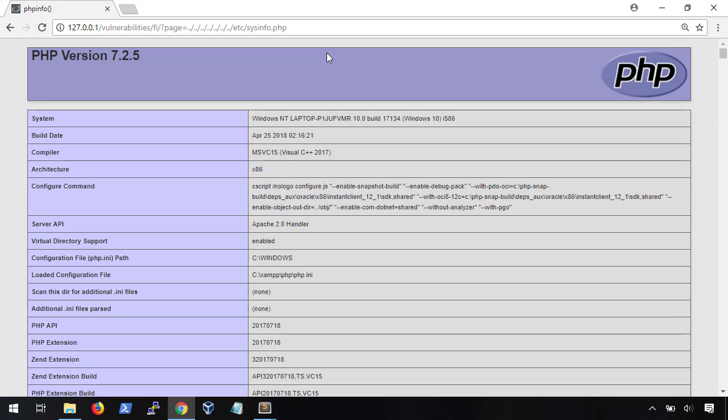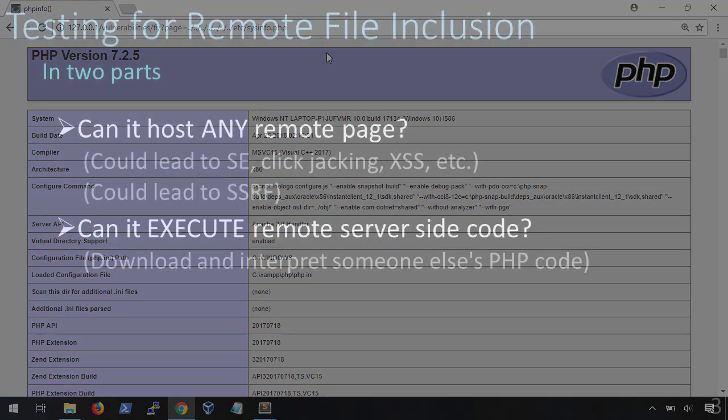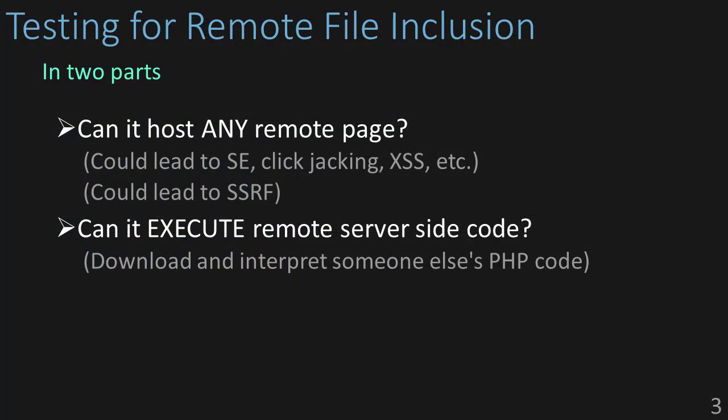Enter remote file inclusion. RFI is even more serious than LFI, because an attacker could host their own web server but use your website to run their code. Even if your web app doesn't allow code execution, they could still use it as a jump-off point for cross-site scripting, click-jacking, or social engineering attacks. I like to test this in two ways. The first is to see if the vulnerable server can host any web page from a remote server — if it can, we already have a vulnerability that can be abused. This can also lead to a server-side request forgery, or SSRF attack, which we'll get to in a later video. The second is the actual remote file inclusion: the ability to host server-side code that will be downloaded and interpreted by the vulnerable web server.